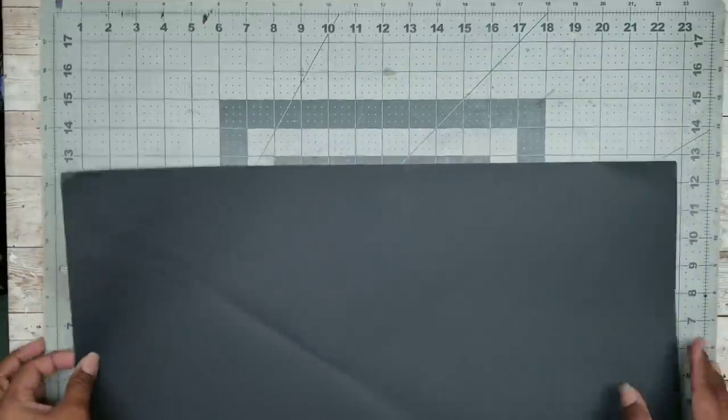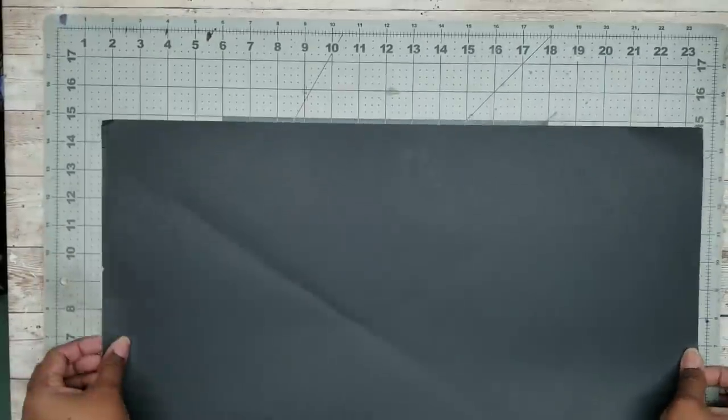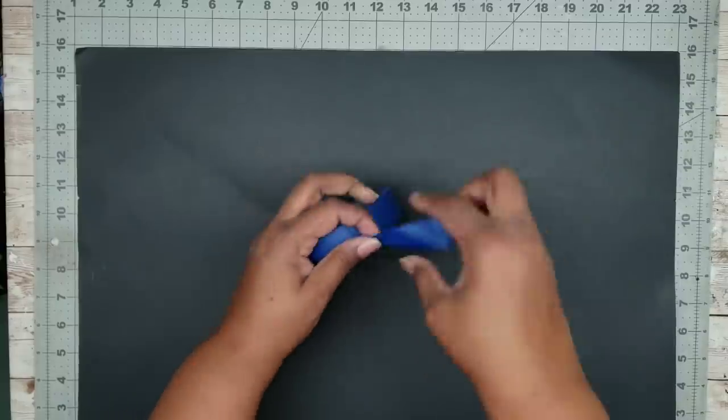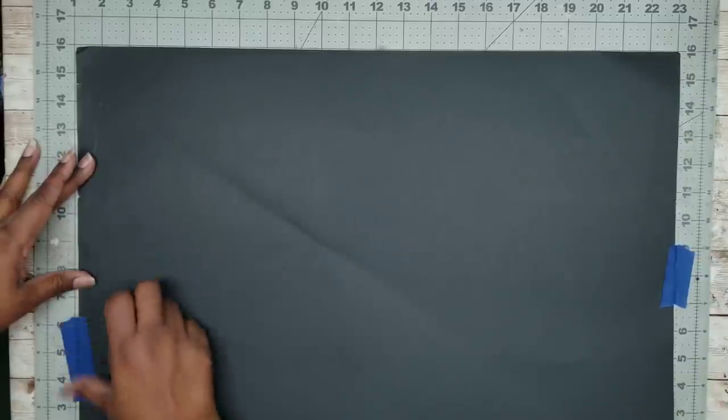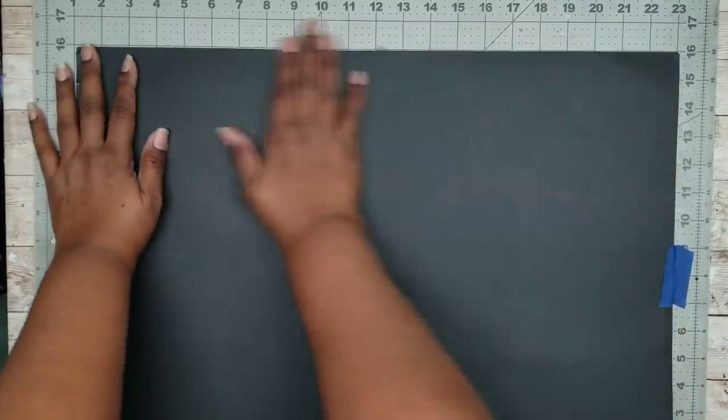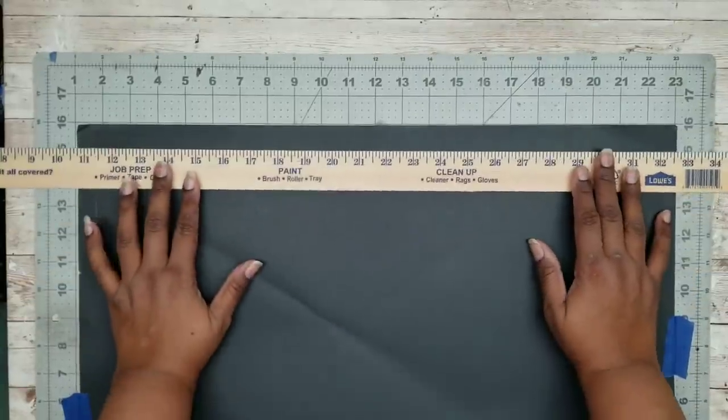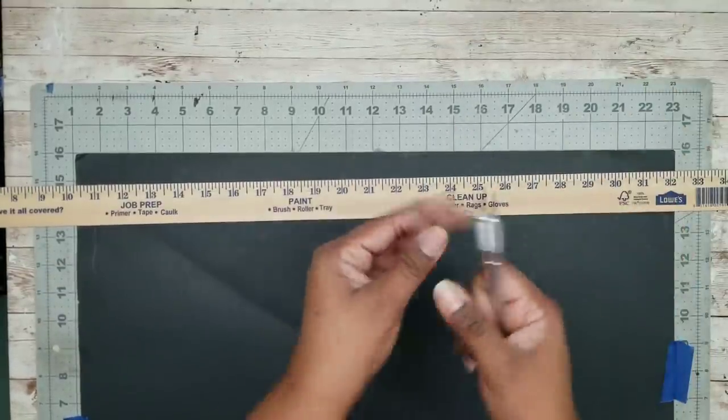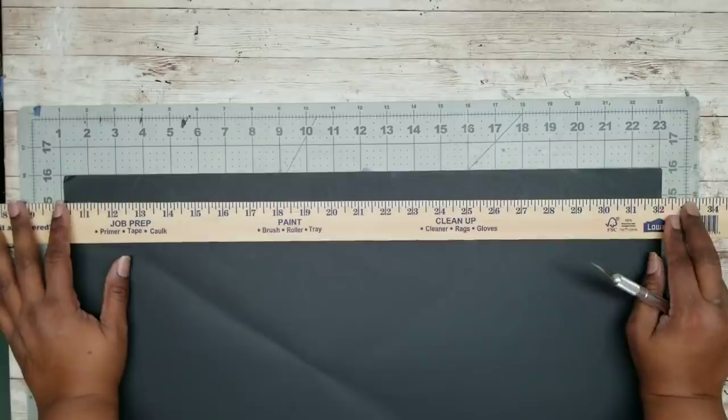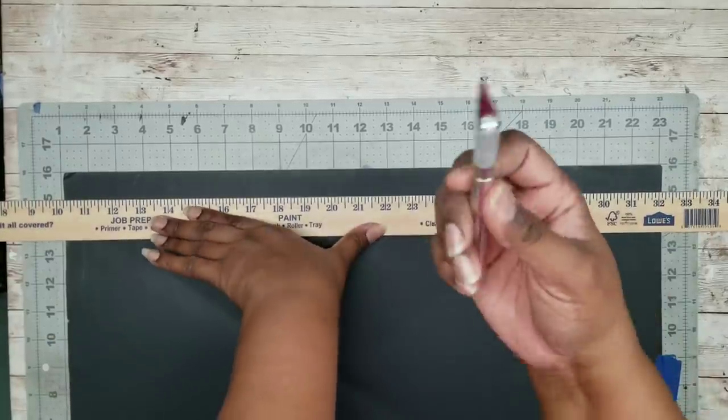Now we're going to work on our poster board and we're going to be cutting this into one-inch strips. In order to keep our board from shifting, we're going to tape it in place with some painter's tape. I have one of these yardsticks from Lowe's that I'm going to use to keep my lines nice and even and I'm going to use my X-Acto knife to cut my one-inch strips.